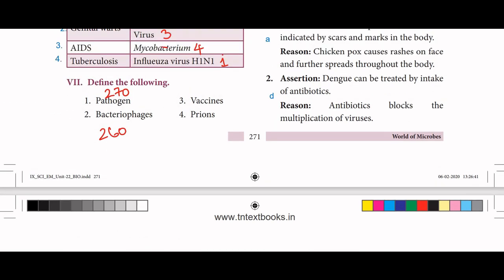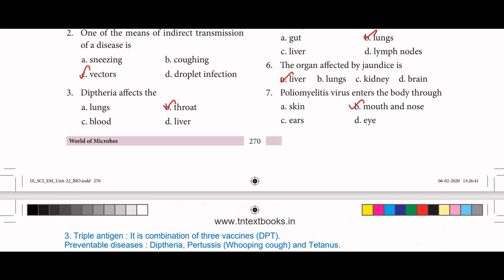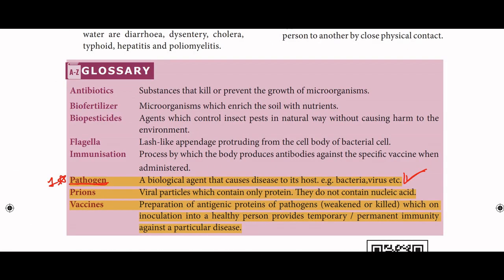Third definition: vaccines — from page number 270. Vaccines are preparations of antigenic proteins of pathogens, weakened or killed, which on inoculation into a healthy person provide temporary or permanent immunity against a particular disease. Fourth: prions are viral particles which contain only protein; they do not contain nucleic acid.